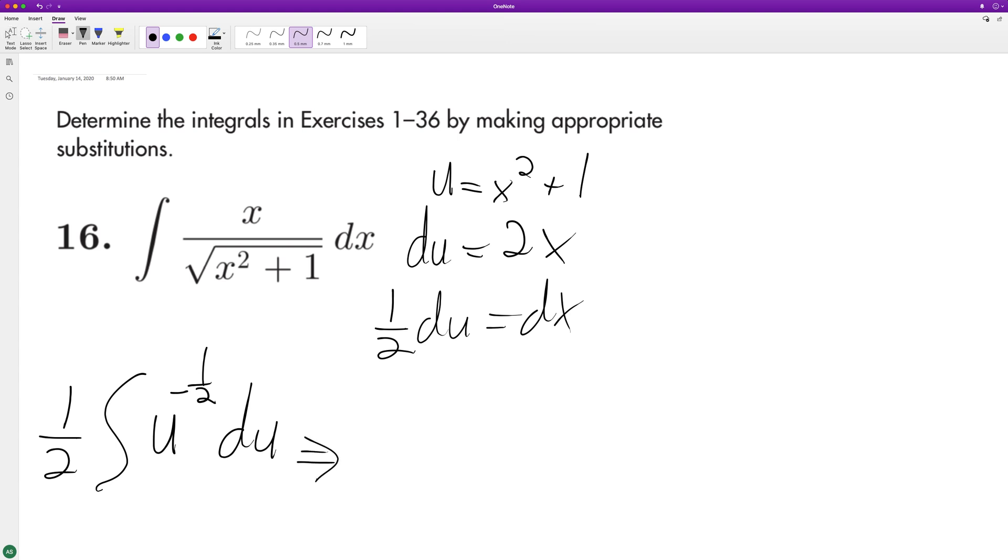So we integrate this and get 1/2 times u raised to negative 1/2 divided by negative 1/2 plus 1.